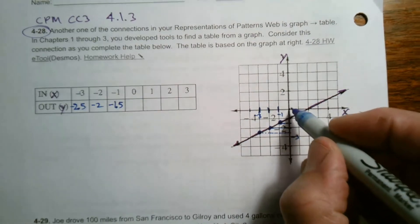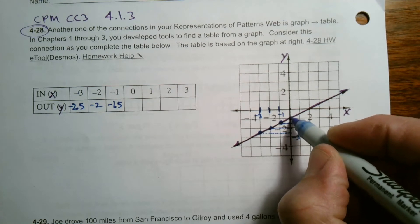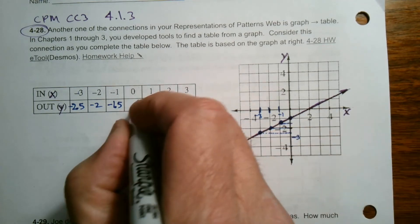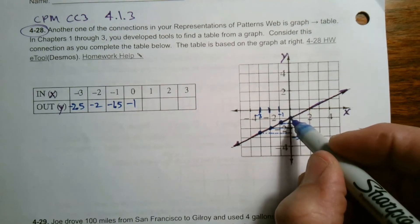At zero, so X is zero. Then where's the graph? Where's the line? It looks like it's at negative one specifically. So at zero, it's negative one.